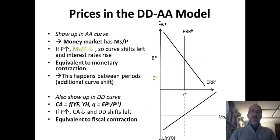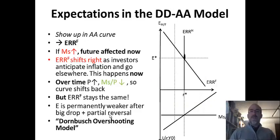Let's look at prices first. Prices show up in the AA curve with the money market. If prices increase, this is going to be the second shift in the curve, then money supply contracts and interest rates go up. That's equivalent to a monetary contraction, or AA to the left. This happens between periods as a second shift. In the DD curve, the current account is a function of home income and foreign income and the real exchange rate. If prices go up, the current account drops, and that's also DD to the left, a fiscal contraction.